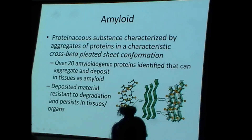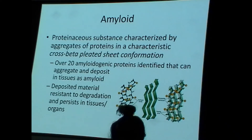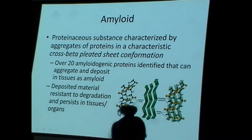We need to talk about amyloid briefly. Amyloid deposition was mentioned briefly in the context of immunoglobulin deposits. Amyloid is a proteinaceous substance that is poorly degraded. It is not caused by any one protein — it can be caused by about 20 different proteins that have the same tendency to deposit in an insoluble fashion in a very particular way called a beta-pleated sheet conformation.